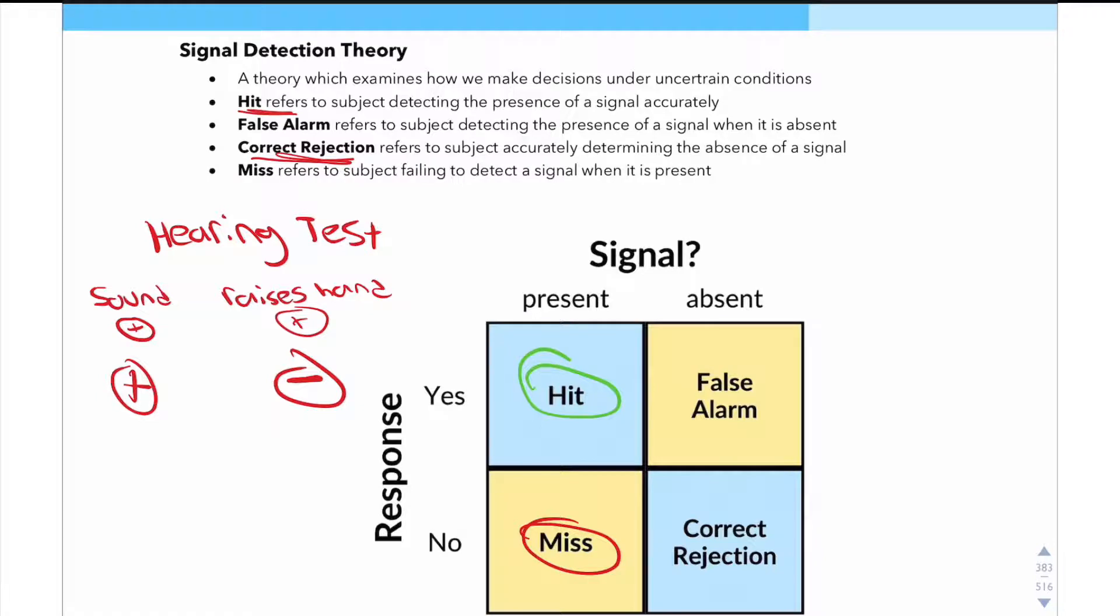Now moving on, let's say that the sound was actually absent. So in the test, they didn't play a sound, but the subject raised their hand thinking that they heard a sound. Well, in that case, it's going to be a false alarm because as you can see here, the signal was absent, but there was a response.